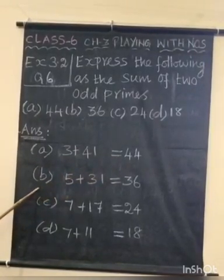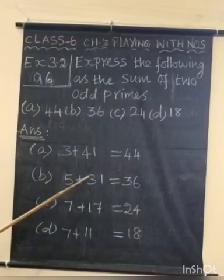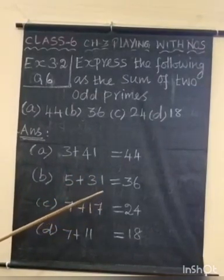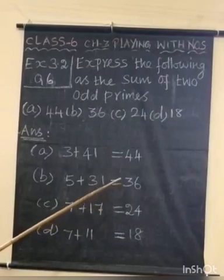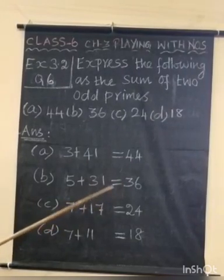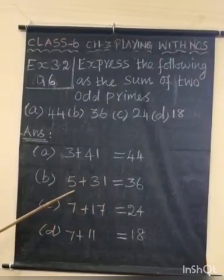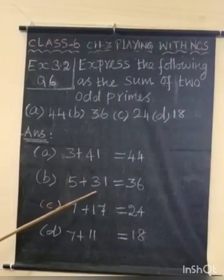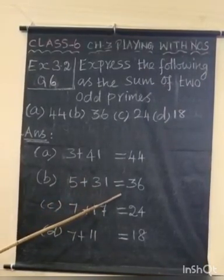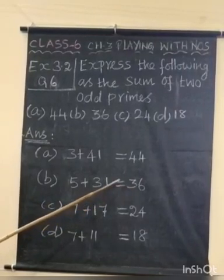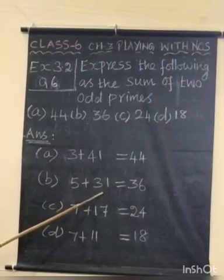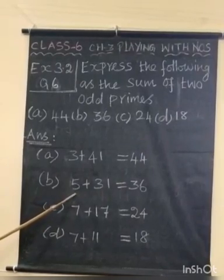Part b, 36. 3 plus 33 which is equal to 36. This is not possible because 33 is a composite number. Next, we will try 5. So 5 plus 31 which is equal to 36. 5 and 31 are odd prime numbers.